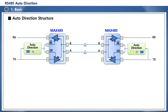In the RS485 application, we will learn about the basic concepts and structure of automatic direction control, also known as auto-direction. Typically, the control pins related to communication direction control for the MAX485 IC consist of the receiver-enable RE pin for switching to receive mode and the driver-enable DE pin for switching to transmit mode. The logic states of these RE and DE pins determine whether the mode is set to data transmission or reception.